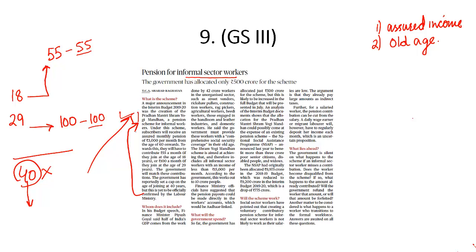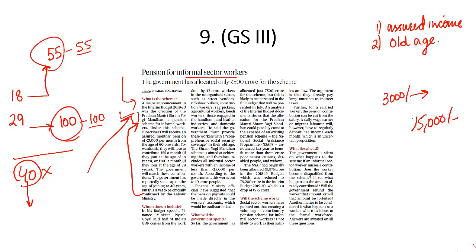Once you make monthly contributions and attain the age of 60, ₹3,000 per month will be your pension. All individuals earning less than ₹15,000 per month can enroll, make monthly contributions matched by the center, and receive ₹3,000 per month as pension upon turning 60. The government has allocated only ₹500 crore for the scheme, and once the new government passes a full-fledged budget, more funds are expected.